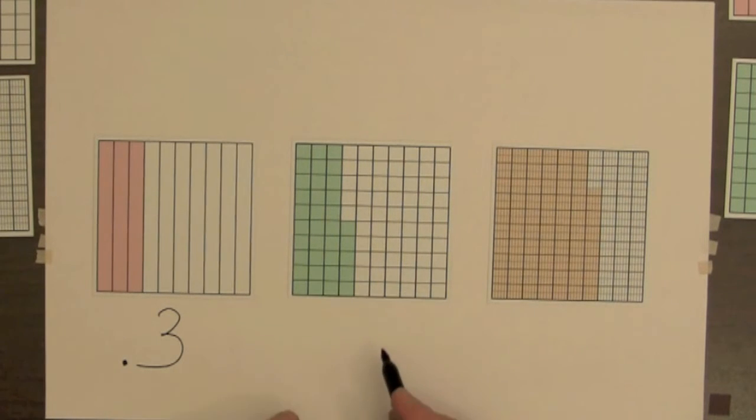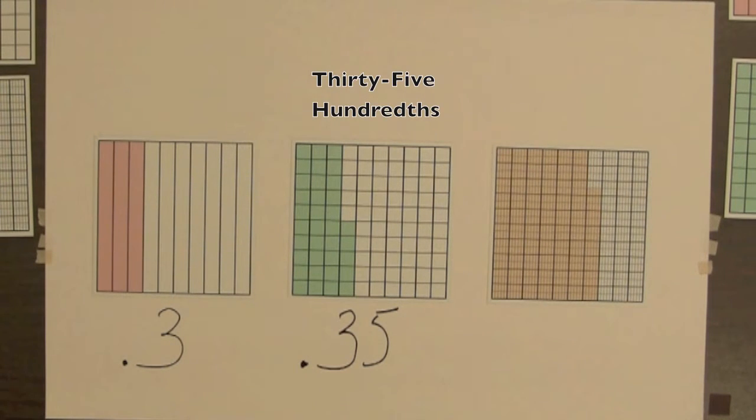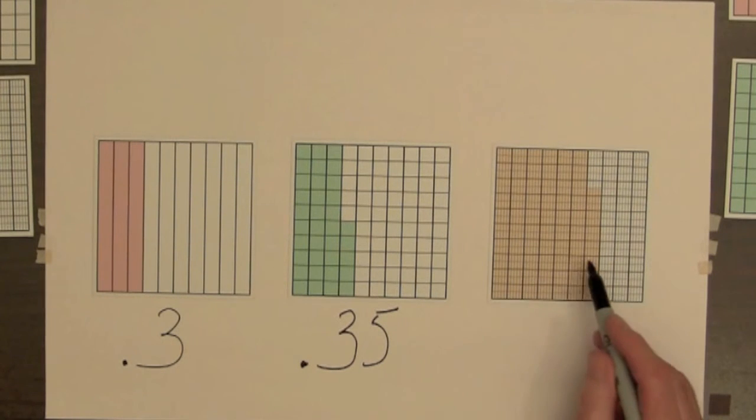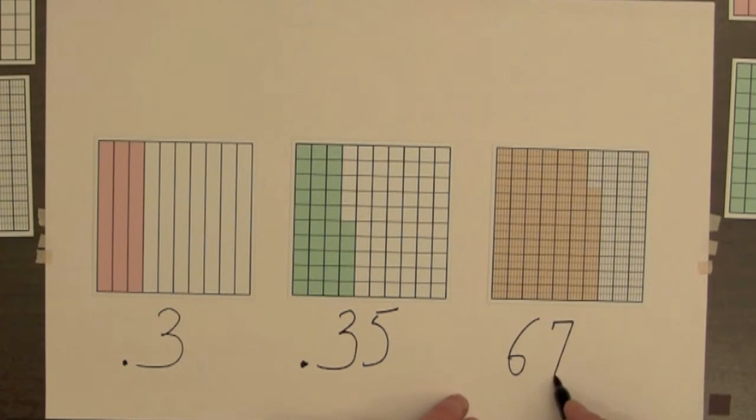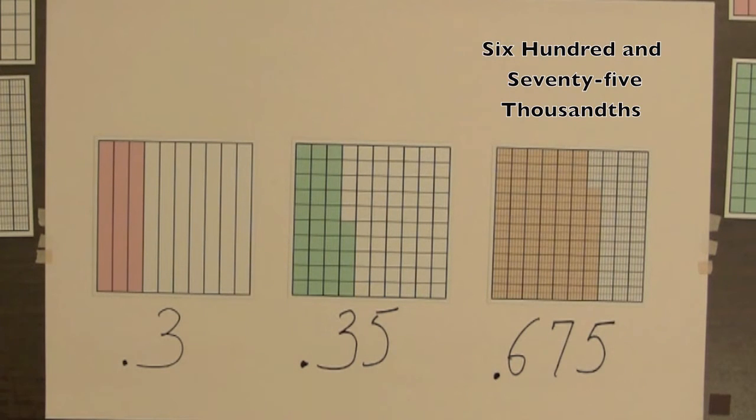The decimal for 35 parts out of 100 is 0.35, and the name of this decimal is 35 hundredths. The decimal for 675 parts out of 1,000 is 0.675, and the name of this decimal is 675 thousandths.